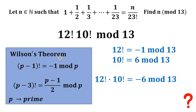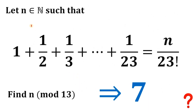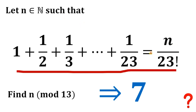Multiplying these two congruences: 12! × 10! ≡ (−1) × 6 = −6 mod 13. Since we don't want a negative remainder, we add 13: −6 + 13 = 7. Therefore, 12! × 10! divided by 13 gives a remainder of 7. So when n is divided by 13, the remainder is 7.